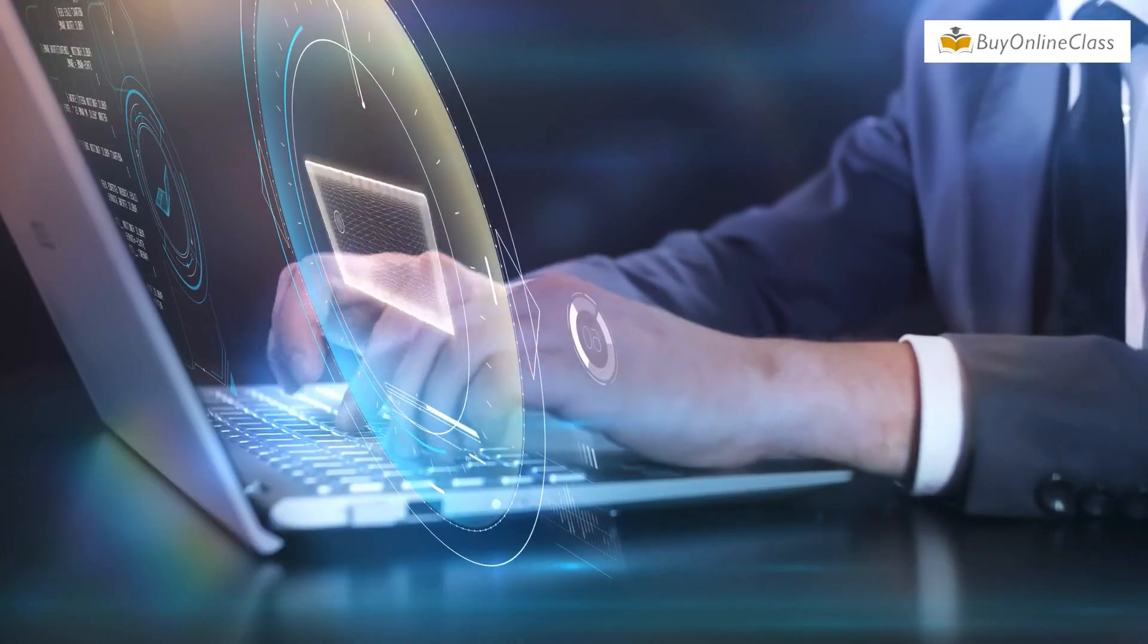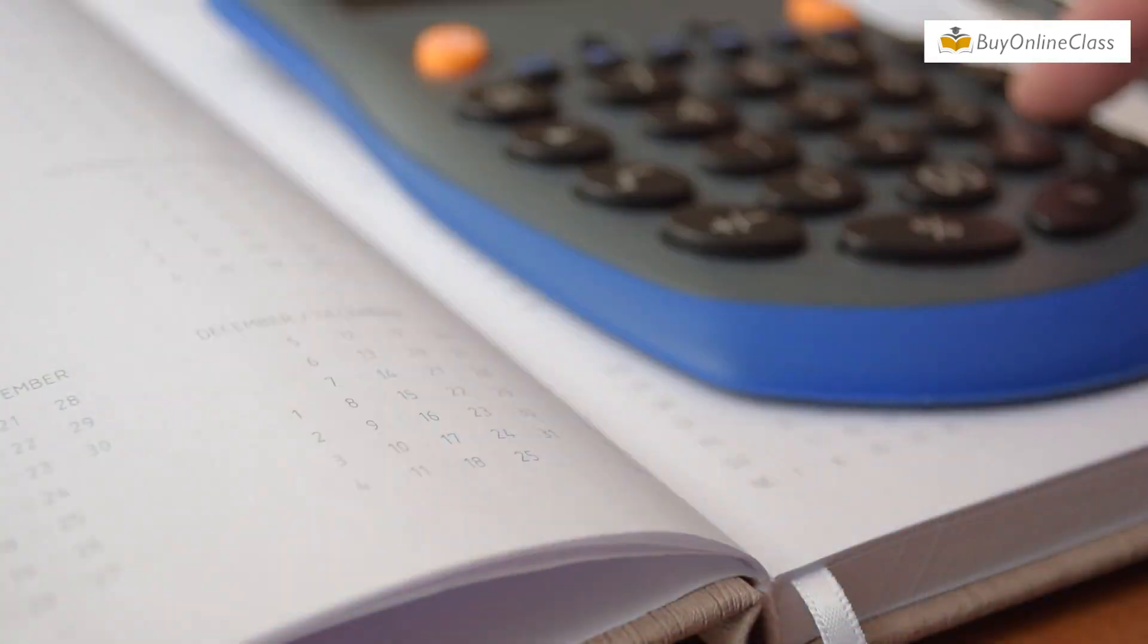With quantitative reasoning, you can find out that 60% of 80 is 48 or calculate a 20% price drop.